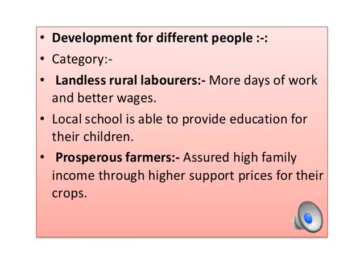Now let's see how different people can have different developmental goals. The first is labor. What does labor want? Labor wants development in a way so that their wages are increased — increase in wages for a laborer is development for them. In the same manner, for a child, development is going to school rather than working in a factory as child labor. And for a prosperous farmer, assured high family income through highest support prices for the crop is development for them.